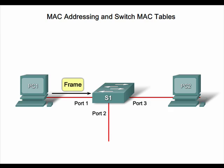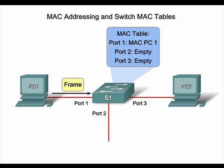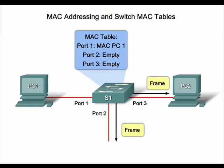In Step 1, the switch receives a frame destined for PC2 on port 3 from PC1. In Step 2, when the switch receives the frame, it places the MAC address for PC1 and its associated port in its MAC address table. Notice that the switch does not yet know what port is associated with PC2, the destination of the frame. In Step 3, because the switch does not yet know which port PC2 is on, it broadcasts the frame out all ports except port 1, which is connected to the source of the frame.